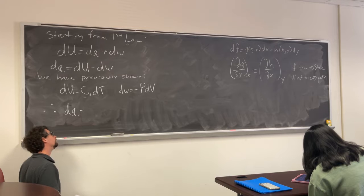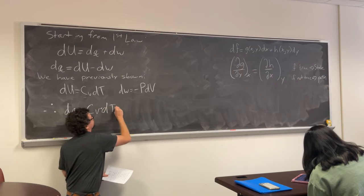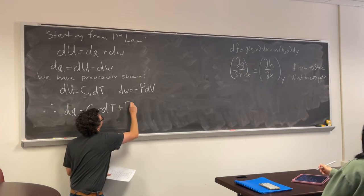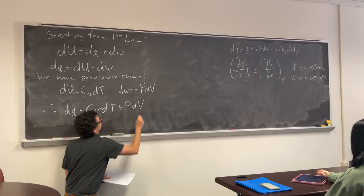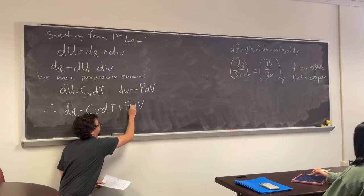We have previously shown several times dU is equal to Cv dT and that dW is equal to negative P dV. So therefore, what would dQ be equal to? Cv dT plus P dV.